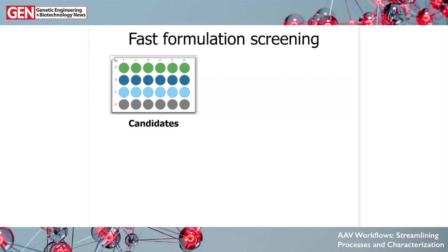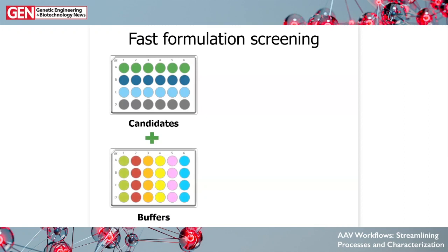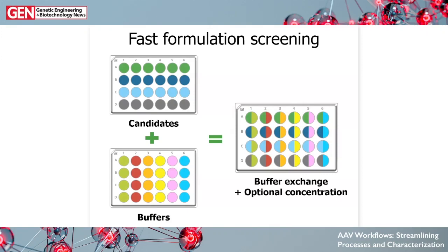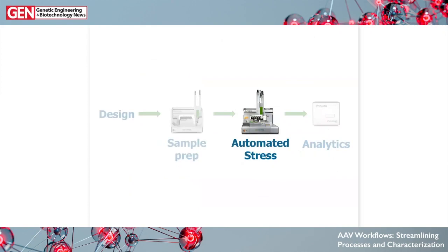All of that together lets you get through fast formulation screening — taking four candidates across six different buffers, doing a DOE-style buffer exchange and screening with optional concentration at the end. You get all the AAVs you want into all the buffers you need to screen, accomplished in a high-throughput automated fashion.